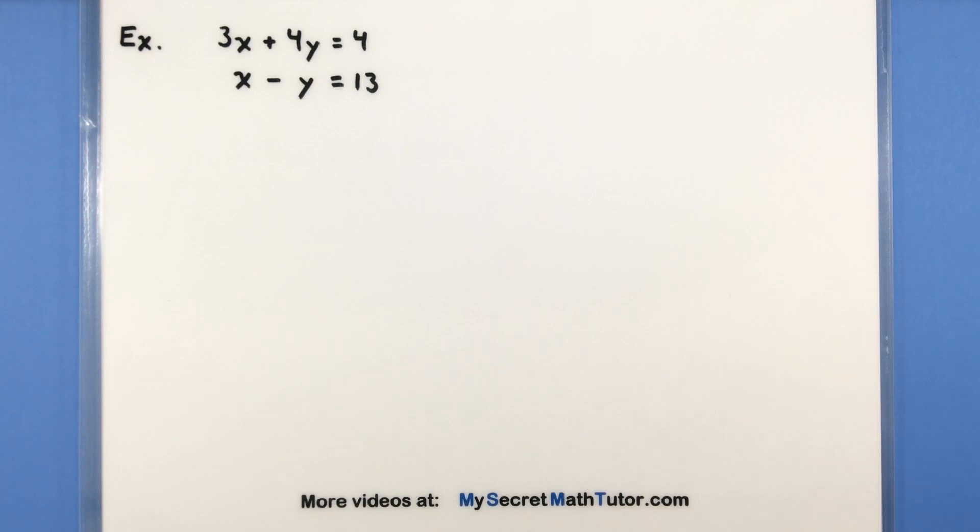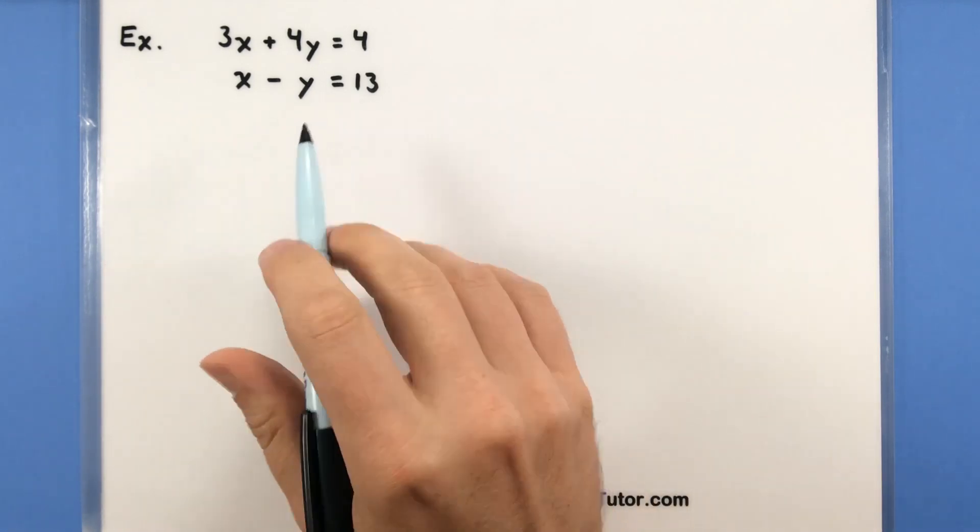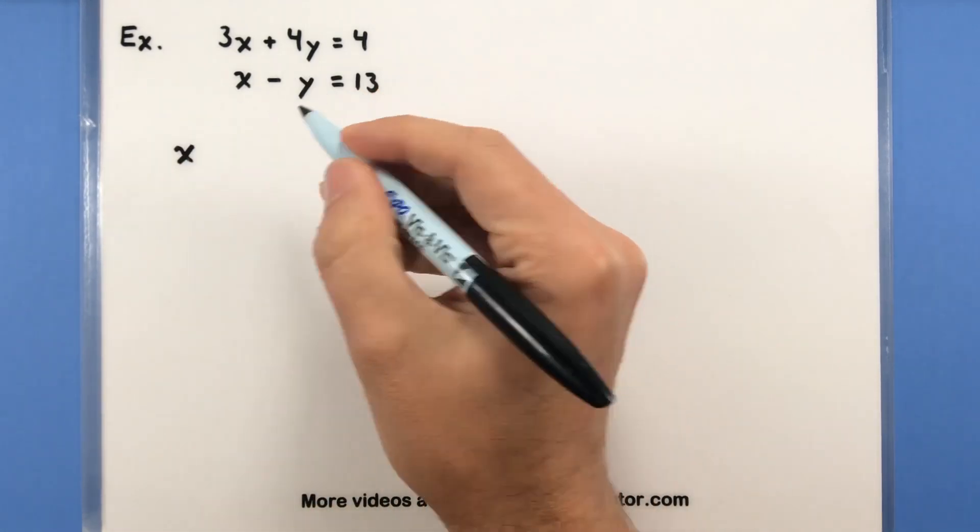So again, the very first step is to just pick a variable and then solve for it. Since I have no preferences here, I'm going to take my second equation, and I'm going to solve this for x.